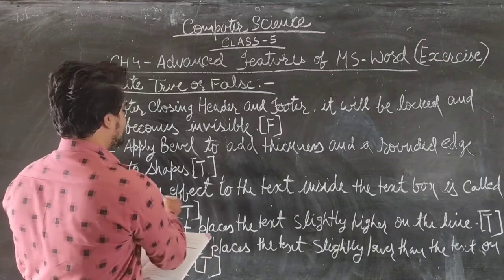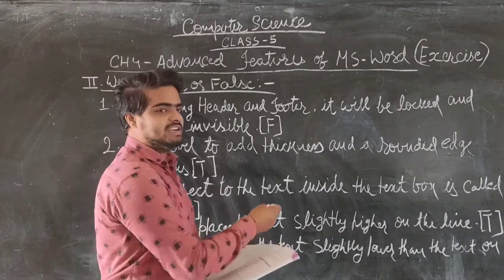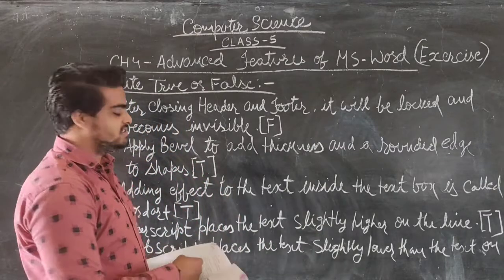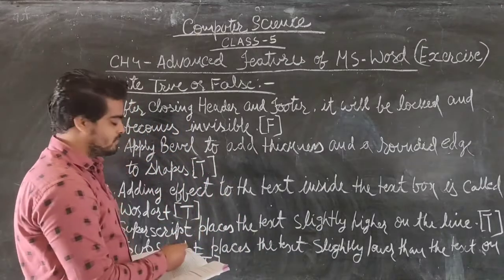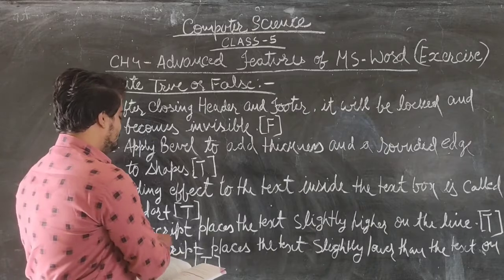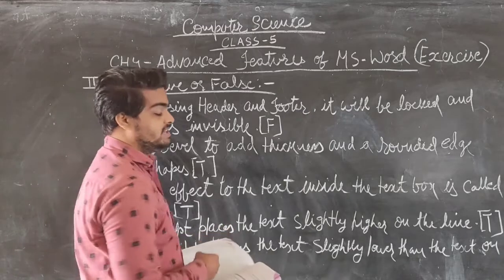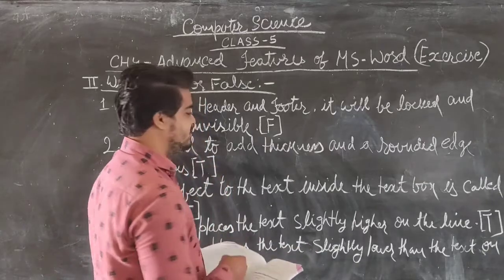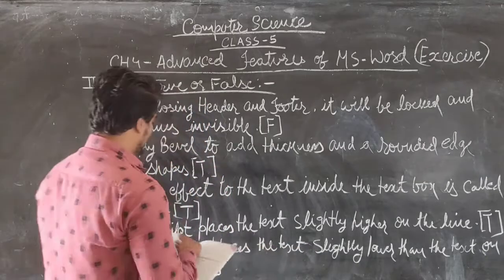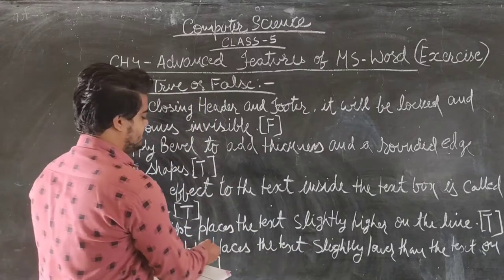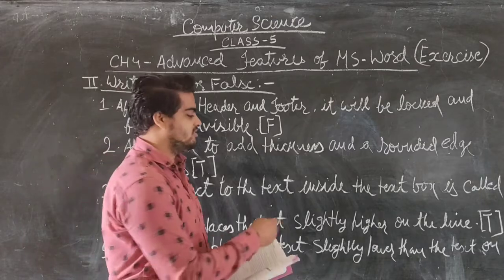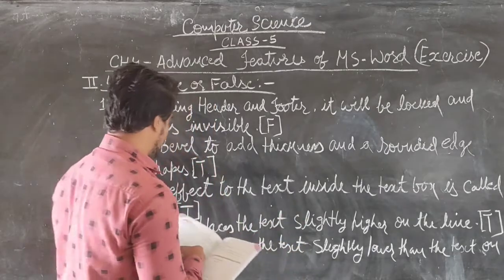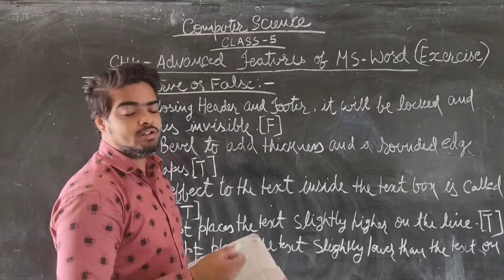Third one — adding effect to the text inside the text box is called WordArt. This statement is true. Fourth one — superscript places the text slightly higher on the line. This statement is true. Fifth one — superscript places the text slightly lower than the text on the line. This statement is also true.